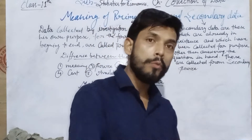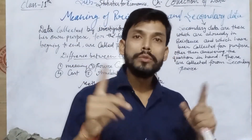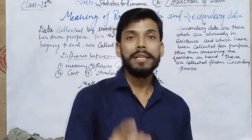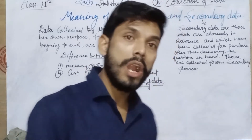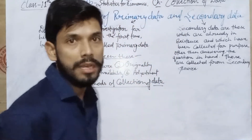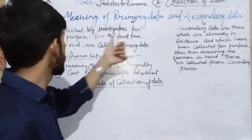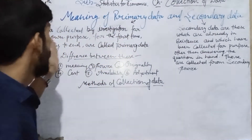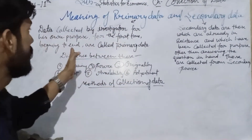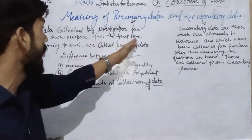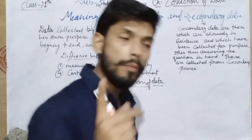From one to two hundred, you ask, and whatever data you get is called primary data. It means if the investigator himself, for his own purpose, collects data for the first time from beginning to end, it is called primary data.